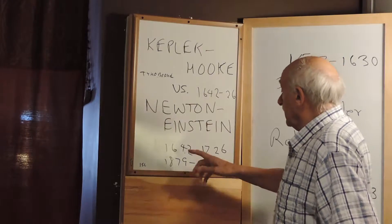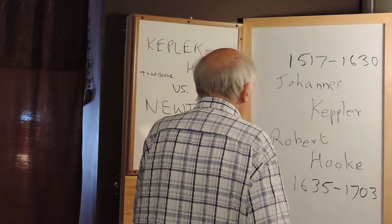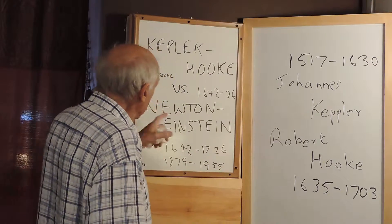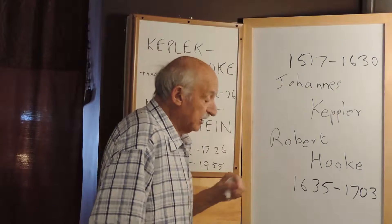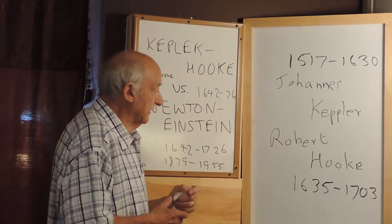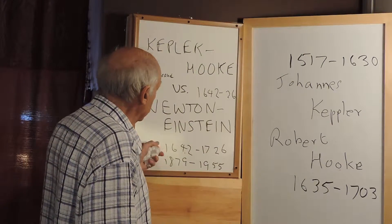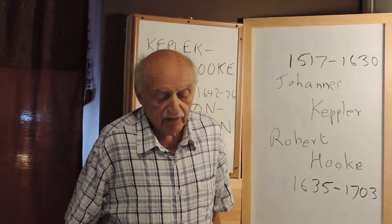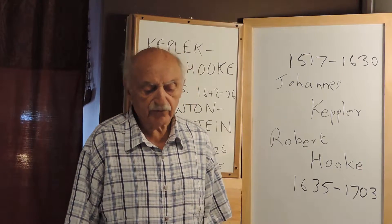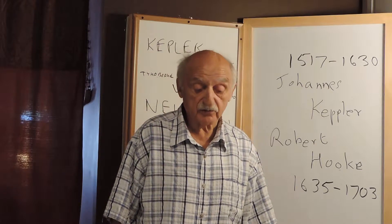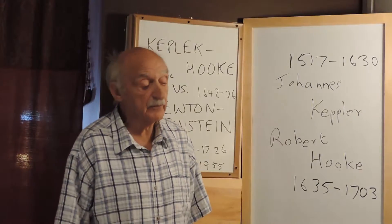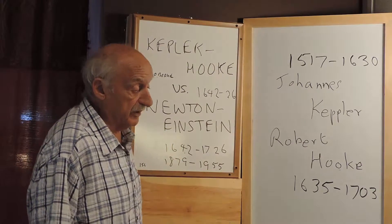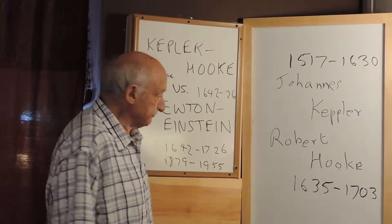Newton and Einstein: Newton lived around 1642 to 1726, the son of a British wealthy farmer. His mother sent him to Cambridge University and he became a physicist and mathematician. He is famous for his discovery of the universal gravity constant G.